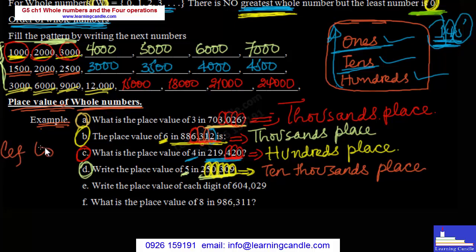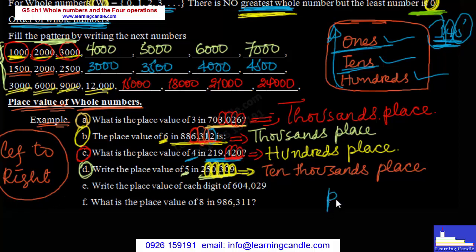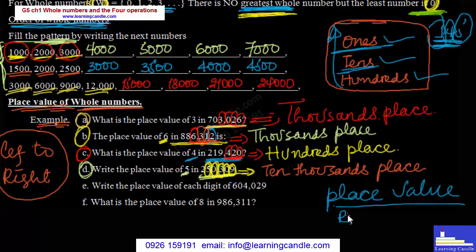Left to right — this is for comparison. The comparing for place value — the place value, from right to left.